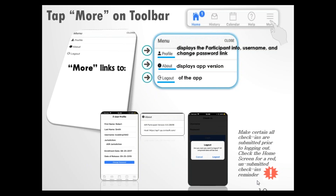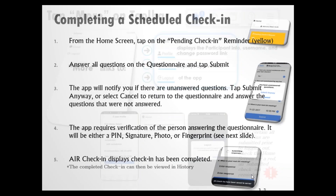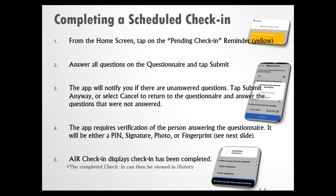Let's actually look at completing a check-in, since that's what this app is all about. From the home screen, all you have to do is tap on that yellow check-in reminder, answer all the questions, and tap submit — it's really that easy. The app will first notify you if you have any unanswered questions. If you left one blank on purpose, tap submit anyway. Or you can select cancel to return to the questionnaire and answer any question you might have forgotten by mistake.